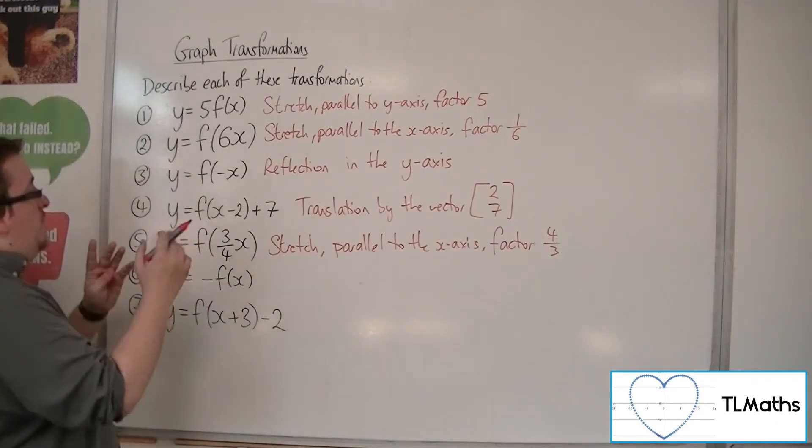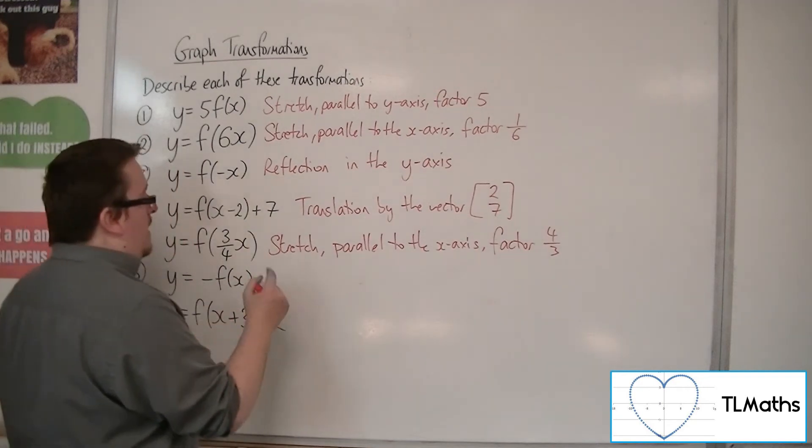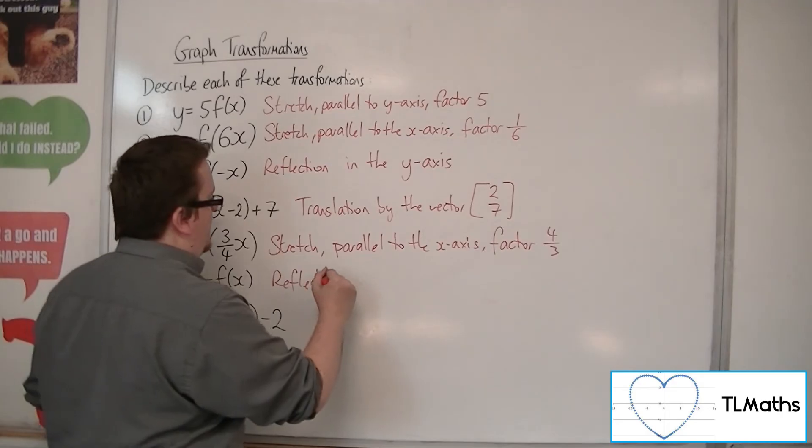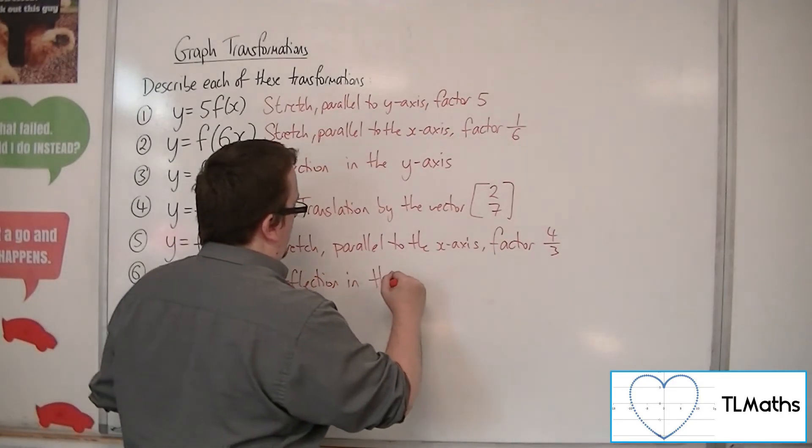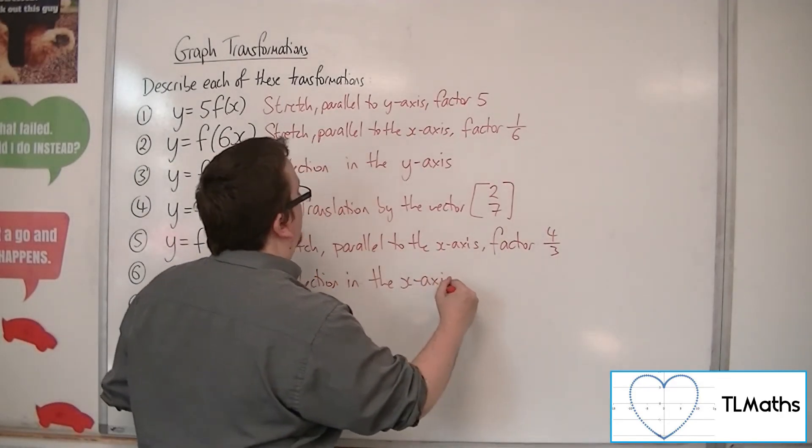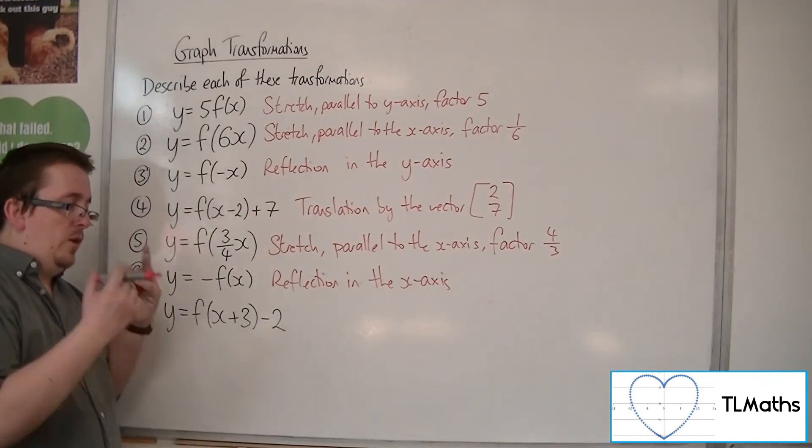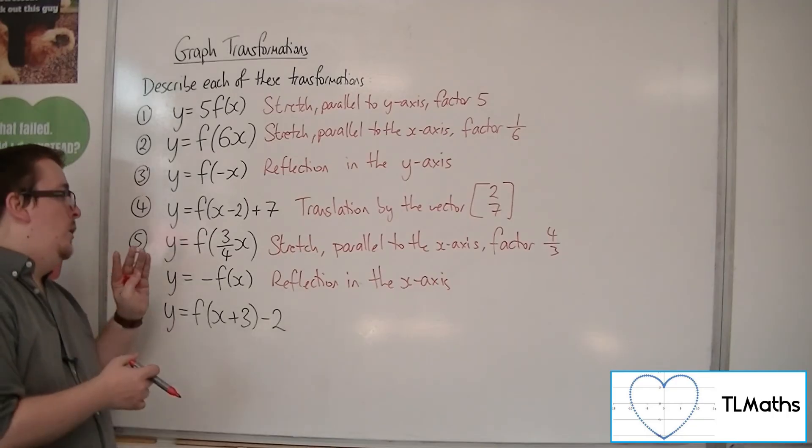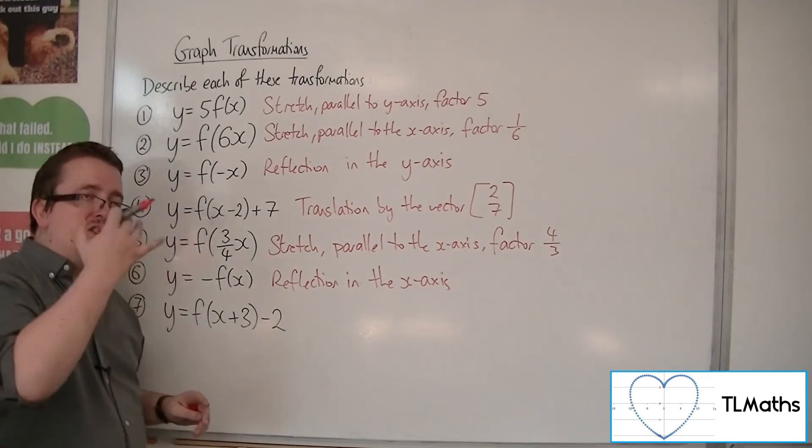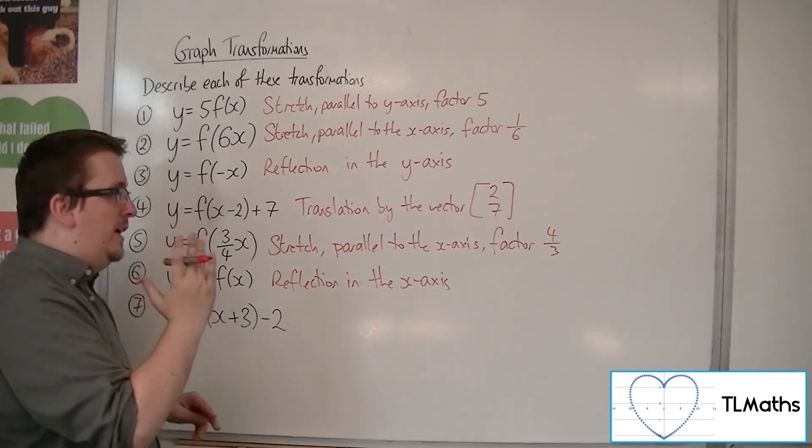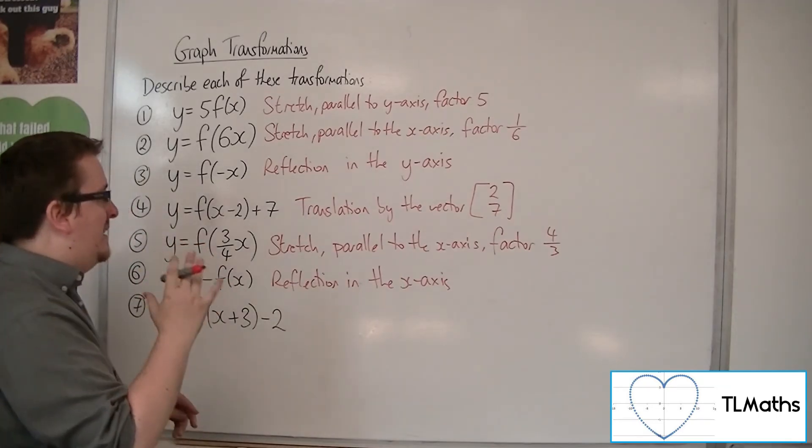Number six: because the minus is outside the bracket, outside f, this must be a reflection in the x-axis. If you're unsure, think of a coordinate like 1, 2. The y-coordinate is changing signs, so 1, 2 becomes 1, minus 2. That's a reflection in the x-axis.